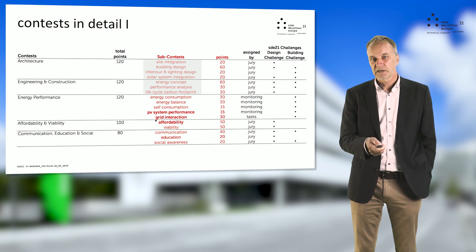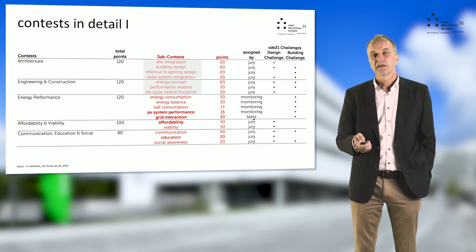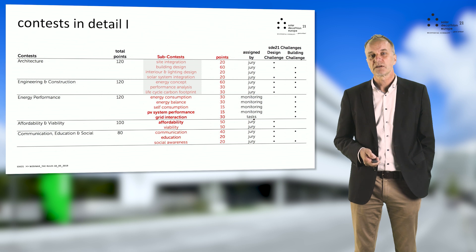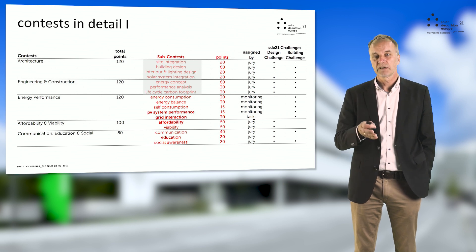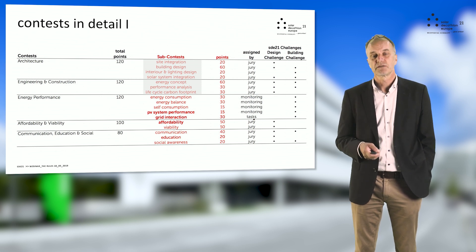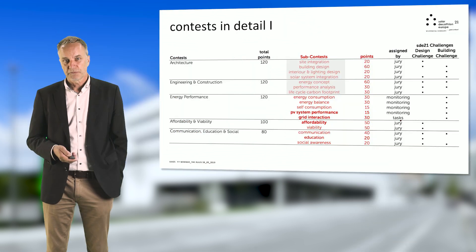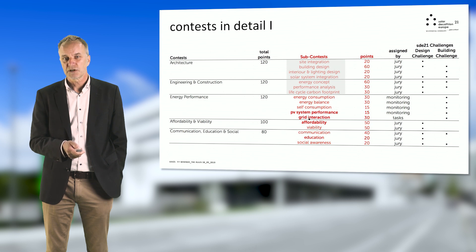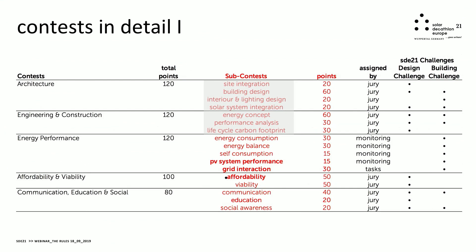Also new is grid interaction. This covers certain issues in the relation of a building's electricity consumption to grid needs. Of course, affordability is a very important issue in this competition because you define a social scenario for your building project, and the project should be affordable for the people the building is designed for.